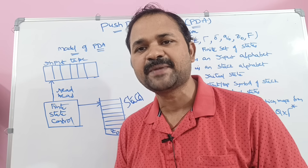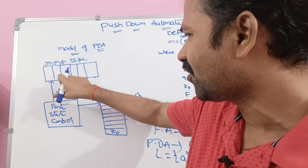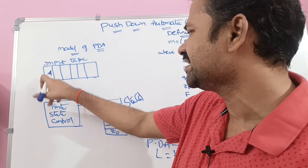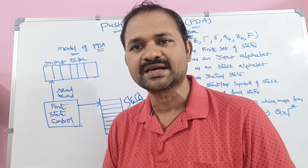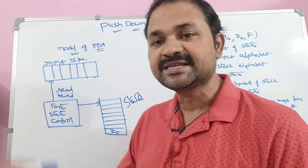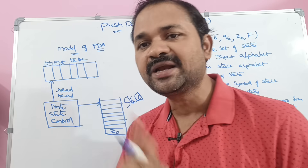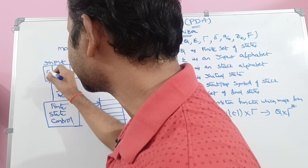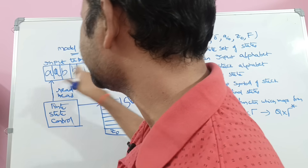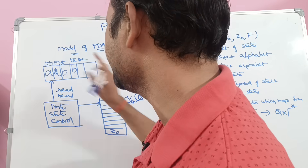Input tape is mainly used for storing the input string. The input tape is divided into a number of cells — first cell, second cell, third cell, fourth cell, and so on. Each cell can store one symbol at a time. For example, let us have a string like A, A, B, B. Each cell stores only one symbol at a time.